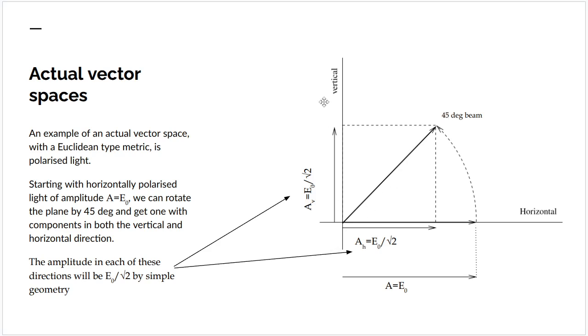But this has orthogonal components. It's got a vertical polarization component and a horizontal polarization component. And by simple geometry, the amplitude of each of these is going to be the original amplitude divided by root 2. That's a simple Pythagorean calculation. I'll leave it up to you to check.